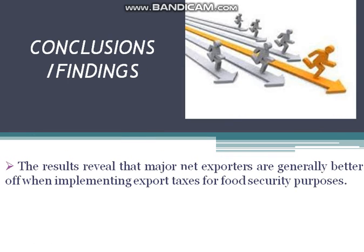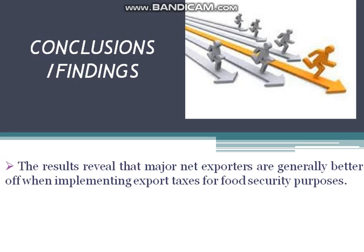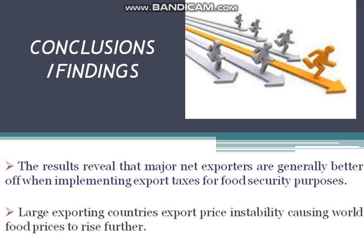From the analysis and research, the following conclusions were reached. First, the results reveal that major net exporters are generally better off when implementing export taxes for food security purposes, because despite a negative impact on farmers, it has a positive effect on food security, terms of trade, and potentially trade tax revenues, so that overall welfare is likely to improve. Second, large exporting countries' export price instability causes world food prices to rise further. This is to the detriment of net importing countries, who lose in terms of food security, terms of trade, and overall welfare, despite a positive impact on farmers.